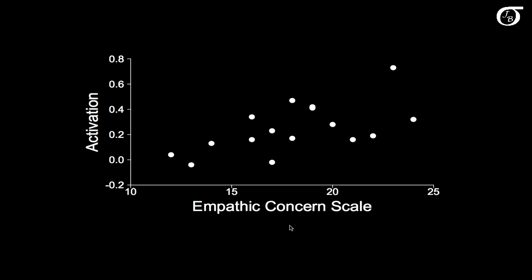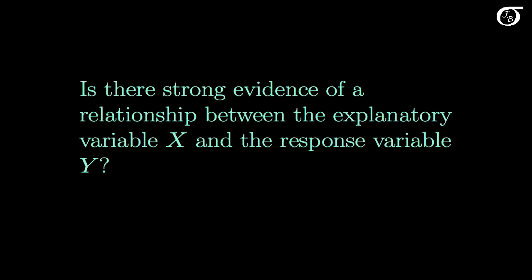Here's our scatter plot. I am calling the empathic concern scale score the X variable, and the activation level in the pain centers of the brain the Y variable. X is an easy-to-measure variable found by having the women answer a few questions, but the Y variable required an MRI, so that was a difficult-to-measure variable. Now we might want to use score on the empathic concern scale to help us predict this activation level. But the main question of interest is simply, is there strong evidence of a relationship between the explanatory variable X and the response variable Y?